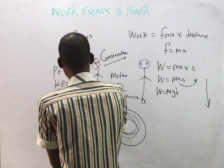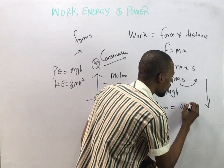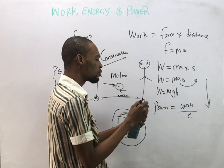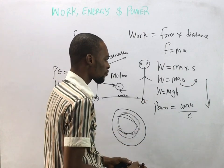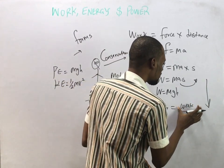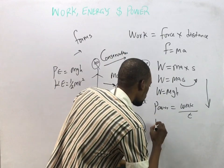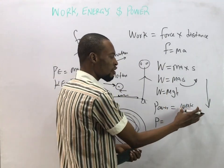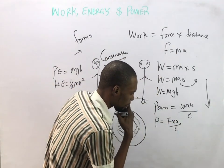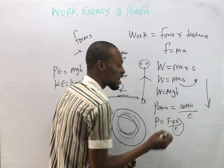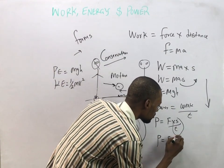Power equals work done over time, so it is the rate of doing work. If we are doing a large amount of work within a short time, that means we have more power. Since work done is force times distance, power equals force times distance over time. Distance over time is velocity, so this implies that power equals force times velocity.